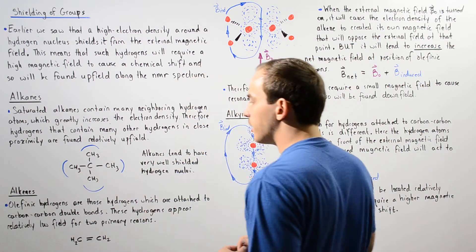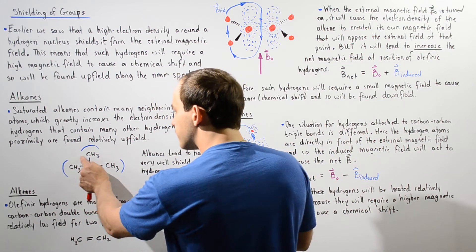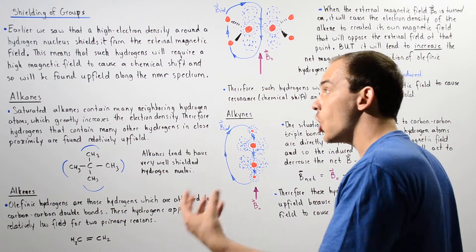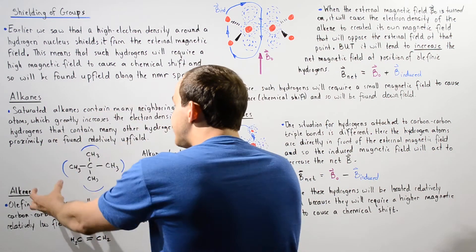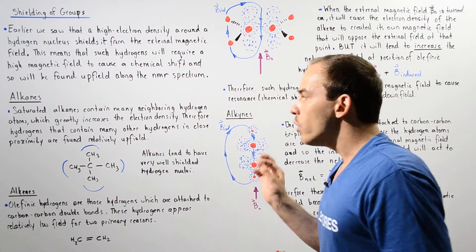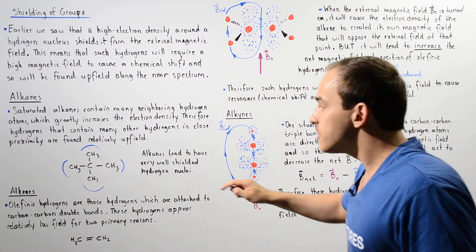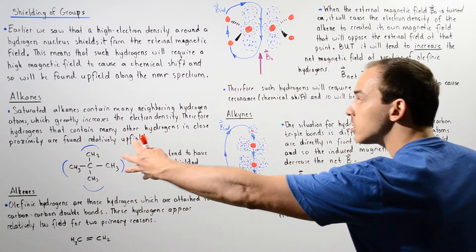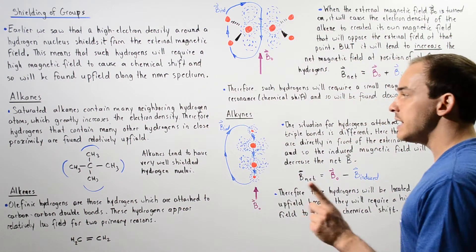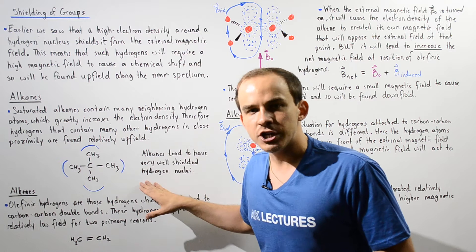Let's take a look at the following particular alkane. We have three methyl groups and each one of these carbons contains three H atoms, and each one of those H atoms has its own electron density. So we have a great deal of electron density around this molecule, and each one of these H atoms will experience a shielding effect. That shielding effect will cause these H atoms to appear far to the right on our proton NMR spectrum — relatively upfield. So alkanes tend to have very well shielded hydrogen nuclei.